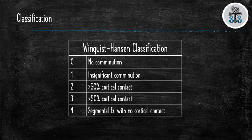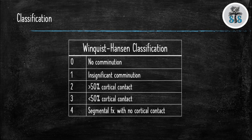A fracture classification you may be asked about on rotations is the Winquist-Hansen classification for femoral shaft fractures. This was used in the past to evaluate if the fracture needed to be locked and what the postoperative weight-bearing status would be. With today's technology, this classification does not aid in management as we have full locking capabilities and routinely encourage full postoperative weight-bearing with intramedullary nails. The classification has five subtypes based on comminution: Type 0 — no comminution; Type 1 — insignificant comminution; Type 2 — comminution with greater than 50% cortical contact; Type 3 — comminution with less than 50% cortical contact; Type 4 — segmental fracture with no cortical contact.